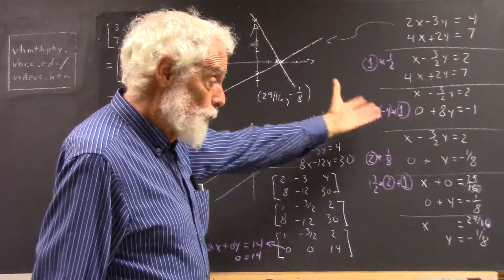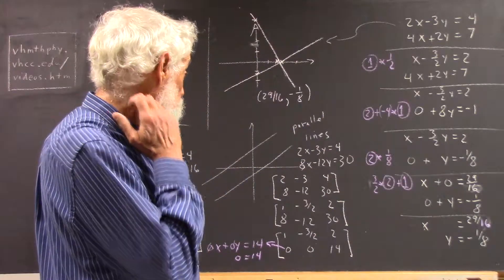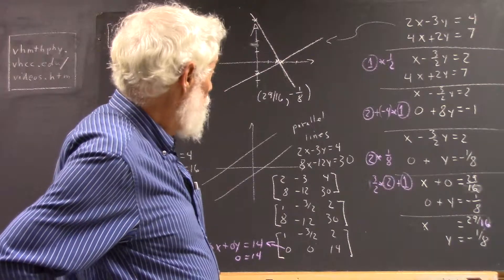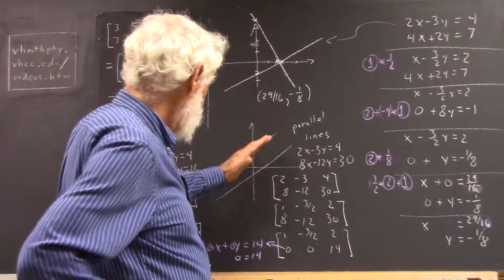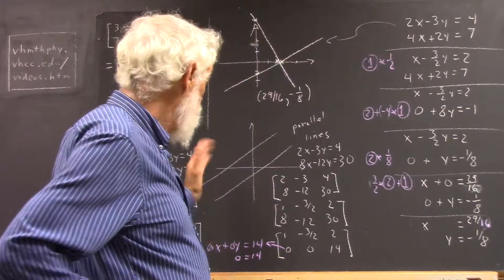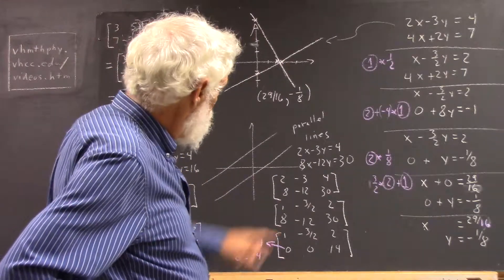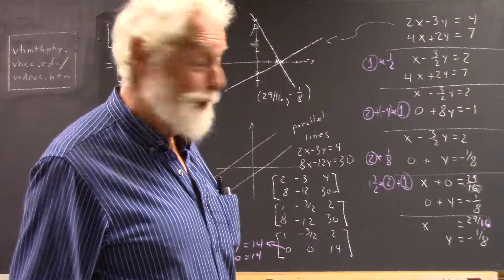Or we can write out the equations and do it, but we're going to do it by matrices. Okay? Now, it's possible the lines are parallel. They never meet. What happens if they are? Well, here is an example of two parallel lines. Let's see what happens.